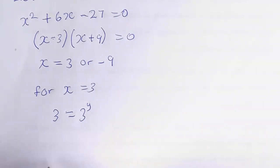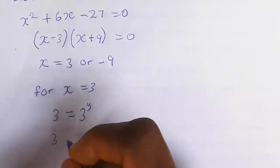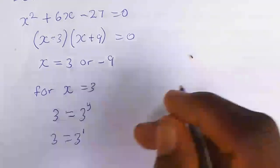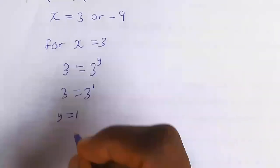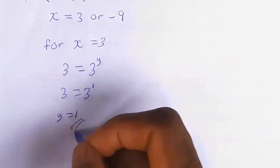So when you see 3 equal to 3 to the power of y, automatically y is 1. This is 3 equal to 3 to the power of 1, and our y will be equal to 1. And this is the final answer.